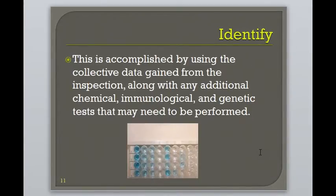The purpose of the five I's is to identify the types of microbes that were initially isolated. This is accomplished by gathering data from the inspection process as well as many other types of assays such as ELISAs, DNA analysis, chemical tests, and more. From these tests, we can gather information on the metabolic functions, genetics, and more. This will help us to identify the microbe.